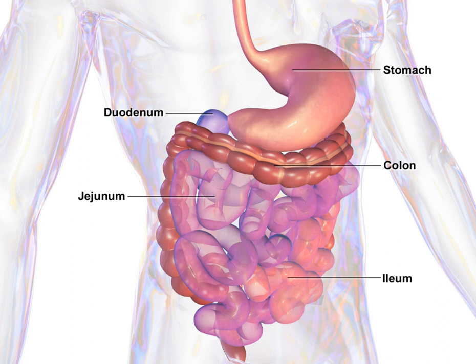The exact demarcation between the upper and lower tracts is the suspensory muscle of the duodenum. This differentiates the embryonic borders between the foregut and midgut, and is also the division commonly used by clinicians to describe gastrointestinal bleeding as being of either upper or lower origin. Upon dissection, the duodenum may appear to be a unified organ, but it is divided into four segments based upon function, location, and internal anatomy.